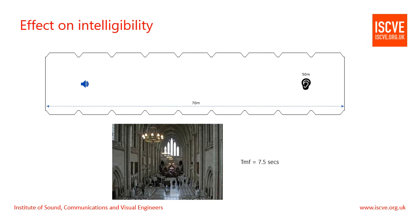Let's have a listen to how the direct-to-reverberant ratio can affect the intelligibility of speech. Here we have a large reverberant hall with a mid-frequency reverberation time of 7.5 seconds — so very, very reverberant. In this hall we have a sound source in blue, and a listener that is sat 50 metres away. Let's listen to a message at this location. As you can hear, that isn't very easily understood. Let's move the listener so now they are one metre away from the speaker, and see how that sounds.